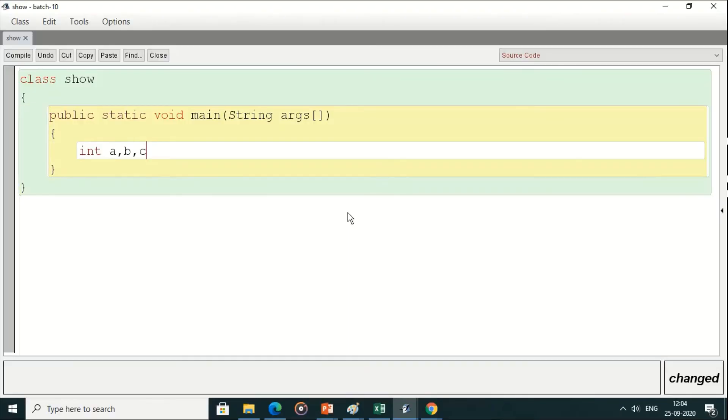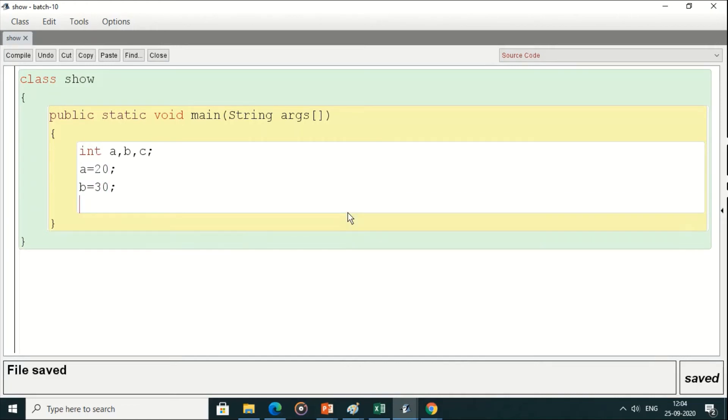We have three variables. The value of a is 20 and the value of b is 30. We have to find the maximum between them, so we can use Math.max with both parameters as arguments.